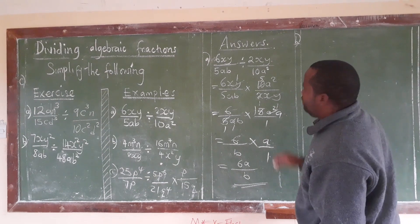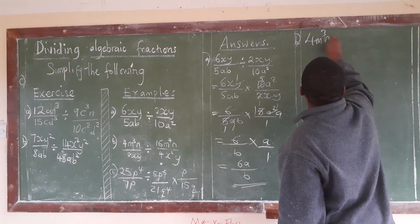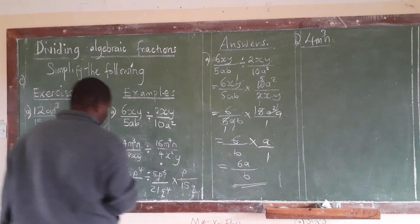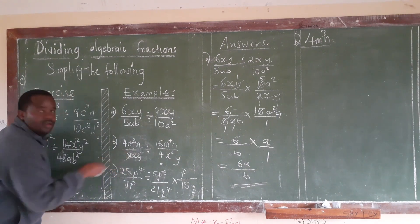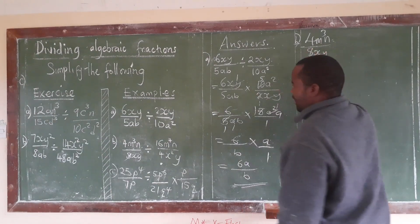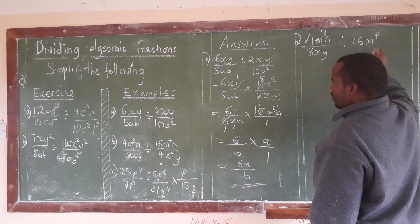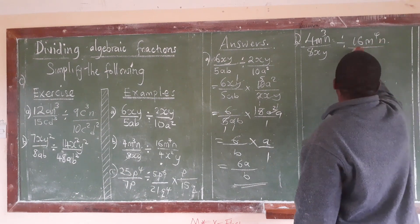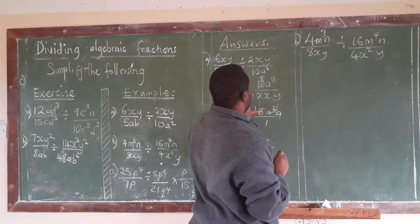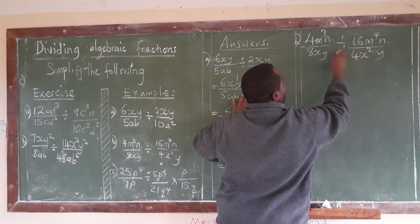Alright, example B says: 4m to the power 3, N over 8XY, divided by 16 to the power 4, N over 4X squared, Y. As is the case, we have to get the multiplicative reciprocal of the second fraction after introducing the multiplication sign.